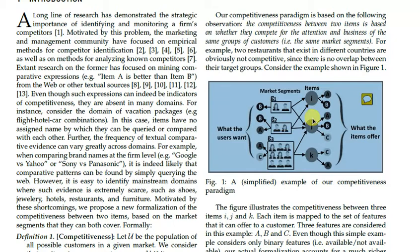Considering items I and J, both can compete. J and K can also compete because J has features B and A. B is in group G1, and K is having features A and C. J can compete with K because it has feature A, but I and K are not competitors because their features are totally different.